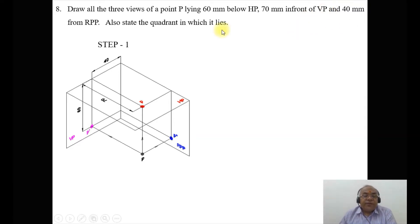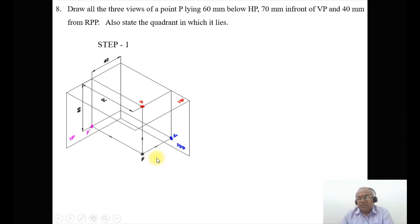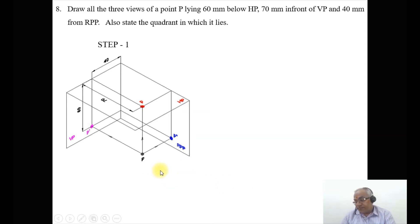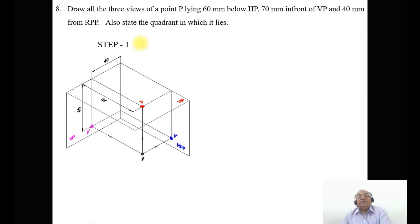When you look from the front view, the object — capital P, meaning it is in space — is between the plane and the observer, who is looking from the front. Similarly, when you look from the top view, the horizontal plane is between the object and the observer. This is the condition of the observer.